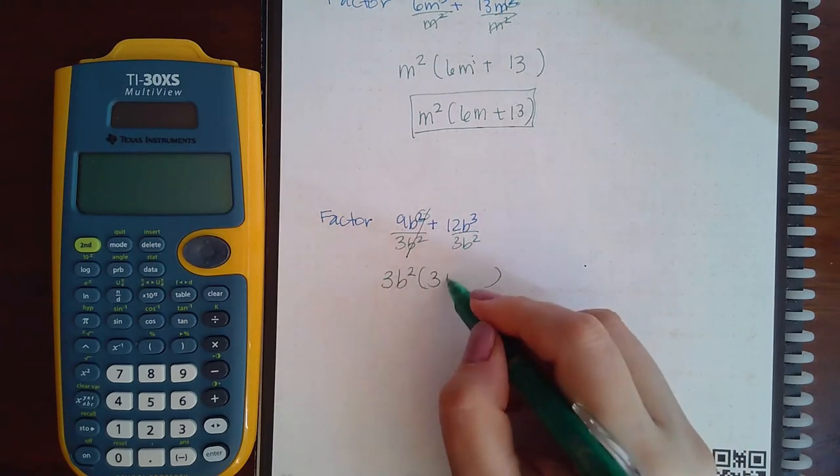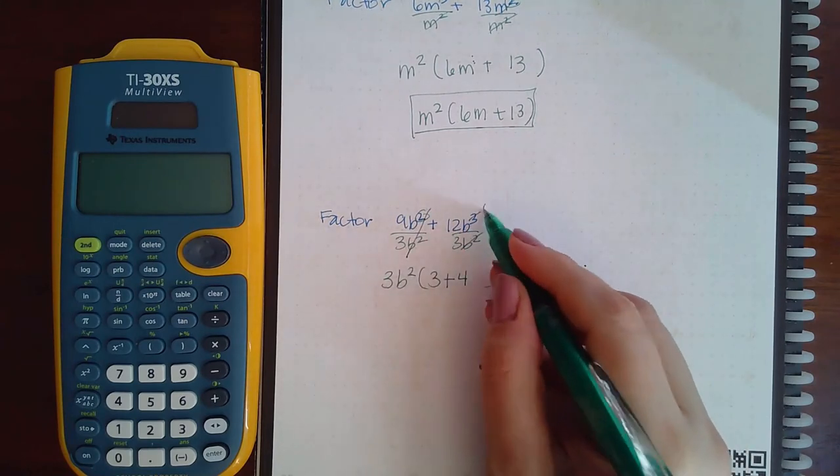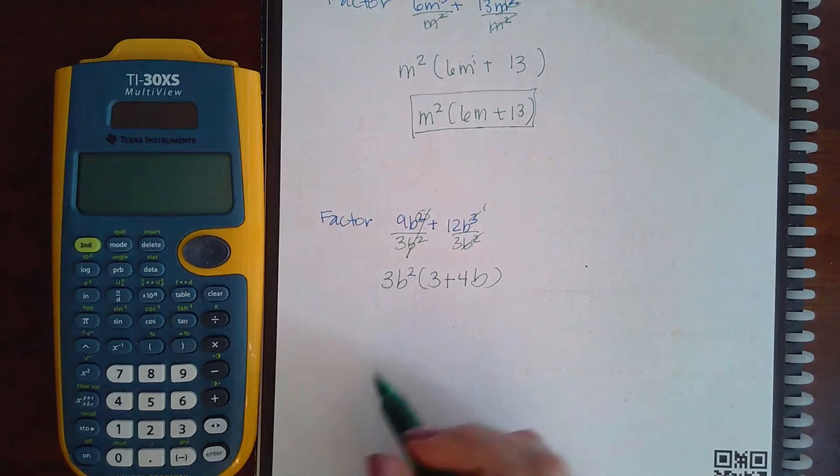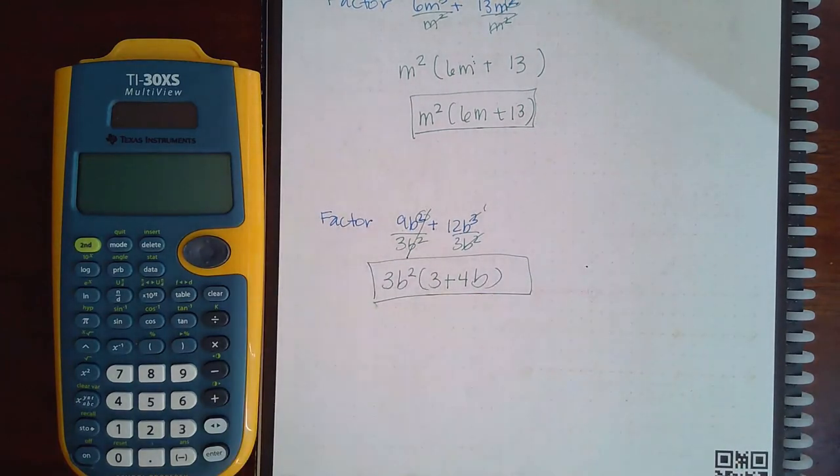Two of the b's cancel leaving me with one and so this is the final answer 3b squared times 3 plus 4b.